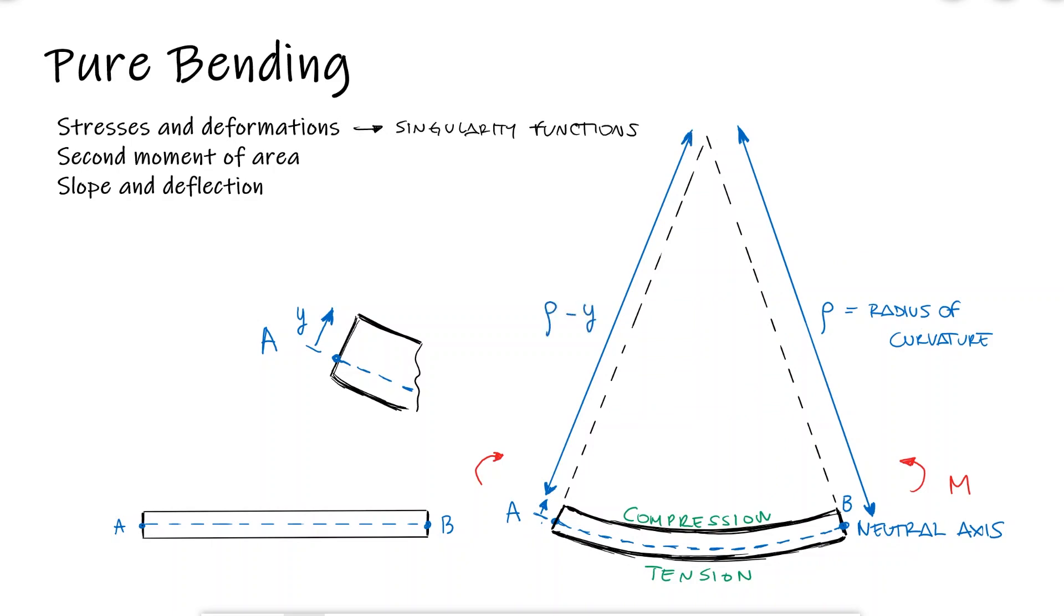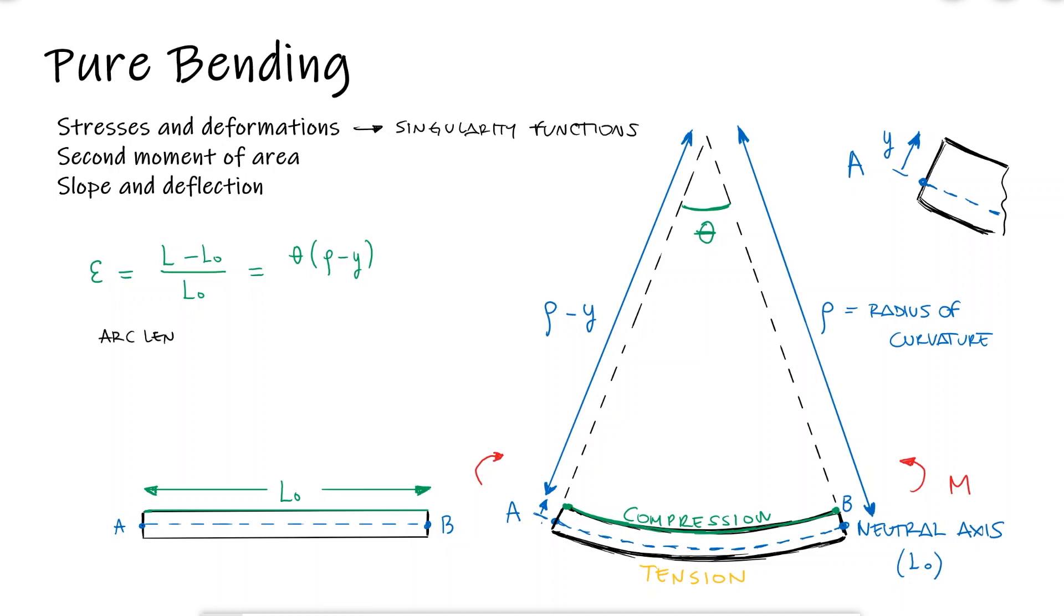The strain for the length that is compressed at the top would be the change of length over the original length. The compressed length would be the length of an arc with angle theta and radius rho minus y. Remember that arc lengths can be calculated by multiplying the angle in radians times the radius. The original length L0 is the distance from A to B.